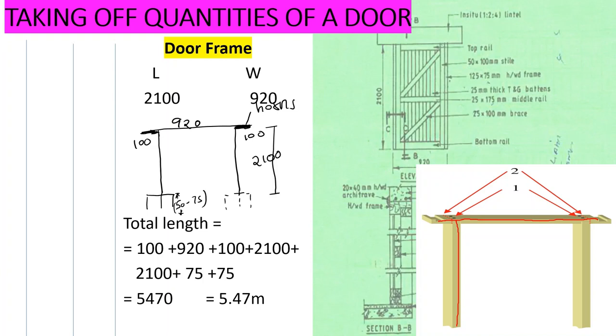And then you find that the door frame has horns. These are horns that are projecting to the walls. Now we have from here up to here is 920, and then the horns we can say they are projecting 100.